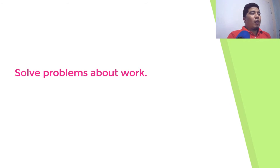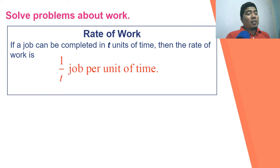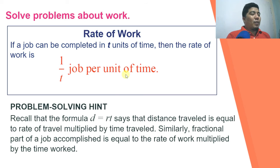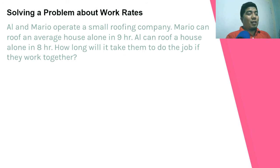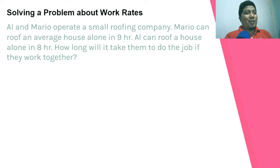Now let's talk about problems about work. In a job, if you can complete a job in t units of time, the rate is one job per t units of time. Similarly to distance equals rate times time, the fractional part of a job accomplished equals the rate of work multiplied by the time worked. Here is the problem: Al and Mario operate a small roofing company.